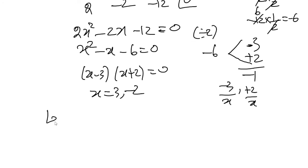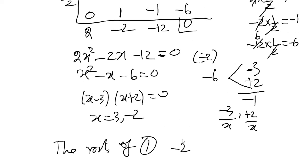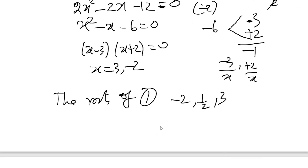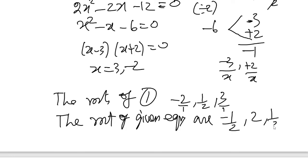The roots of the given equation are -2, 1/2, and 3. To convert to harmonic progression, we take reciprocals: -2 becomes -1/2, 1/2 becomes 2, and 3 becomes 1/3. So the answer is -1/2, 2, and 1/3.